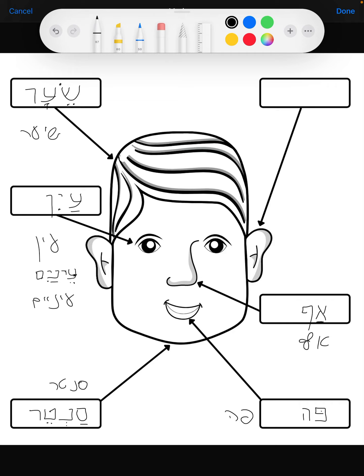Next is your ear. How do we say ear in Hebrew? Ear in Hebrew is ozen. Let's write it down. Ozen.